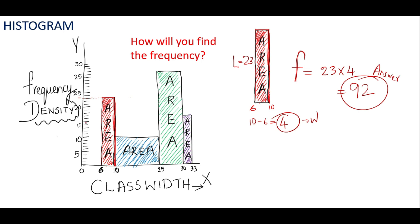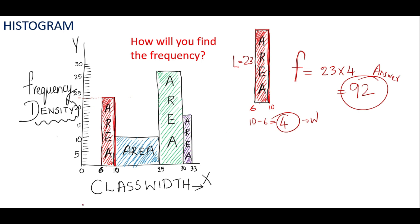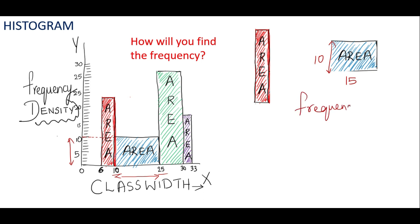So 92 is the frequency for that first group. Taking the second bar, it runs from 10 to 25, so the class width is 25 minus 10, which is 15. The height — the frequency density — is 10. So the frequency is 10 times 15, giving 150.